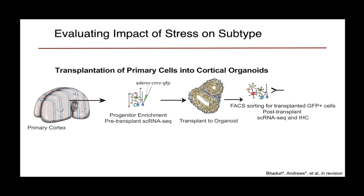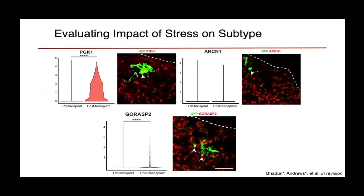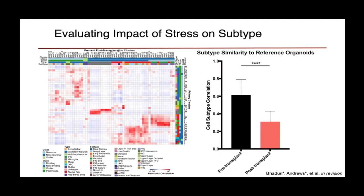To investigate, we took primary tissue and sorted out progenitors, infected them with a GFP virus, and transplanted them into the organoid, then looked at these cells two weeks after transplantation. We were able to see integration of the progenitors, including HOPX-positive outer radial glia cells, into the rosettes of the organoid. After two and a half weeks, we saw upregulation of PGK1 and GORUSB2. When we looked at the subtype specification of these cells, we saw a significant decrease in subtype specification of the transplanted cells, suggesting that the stress may be driving the limitations of subtype specification.